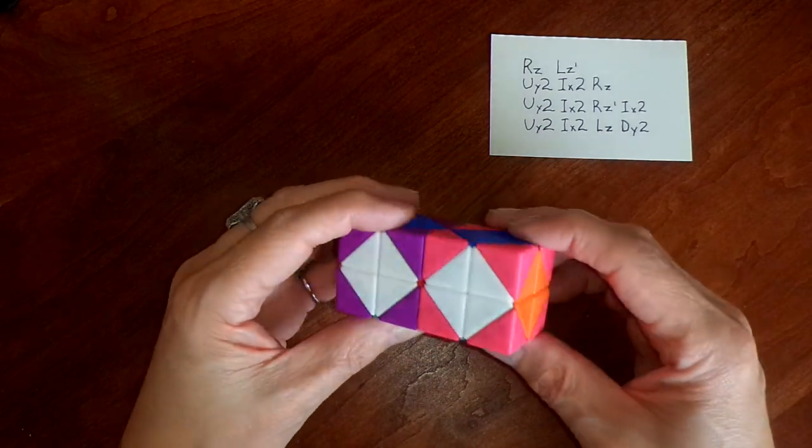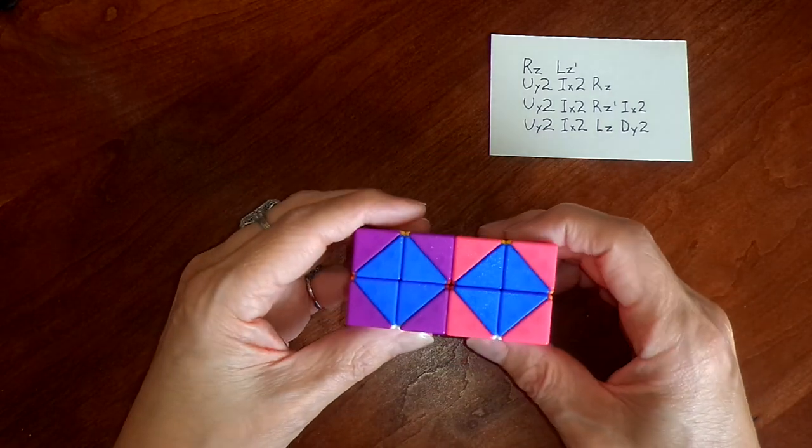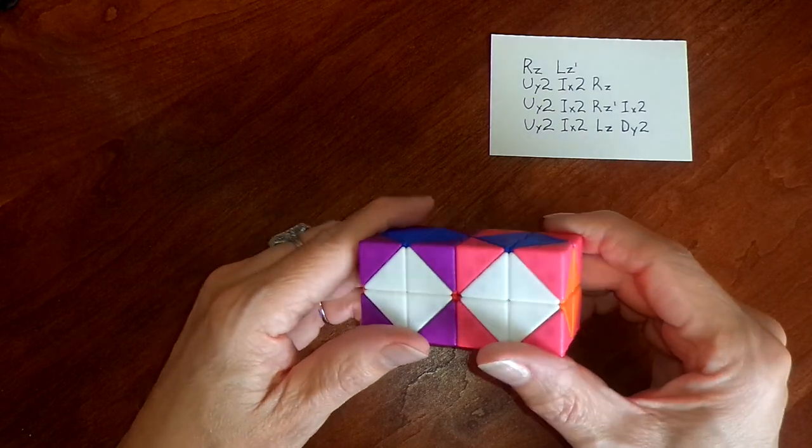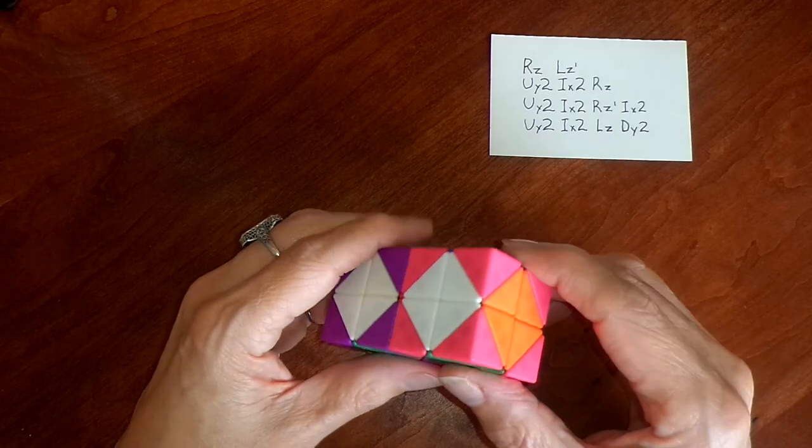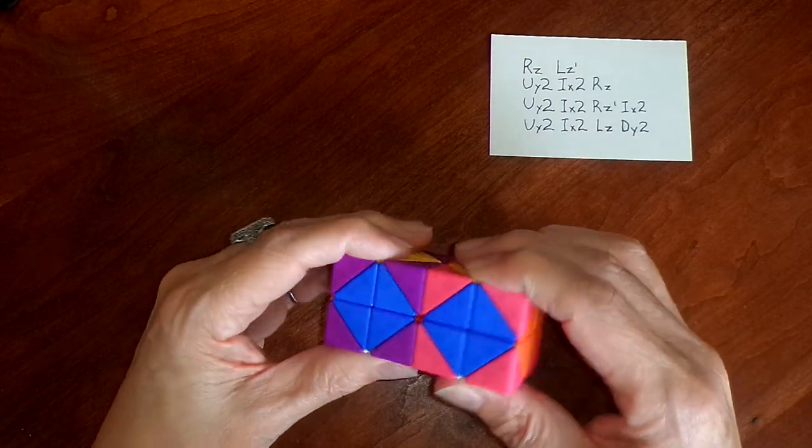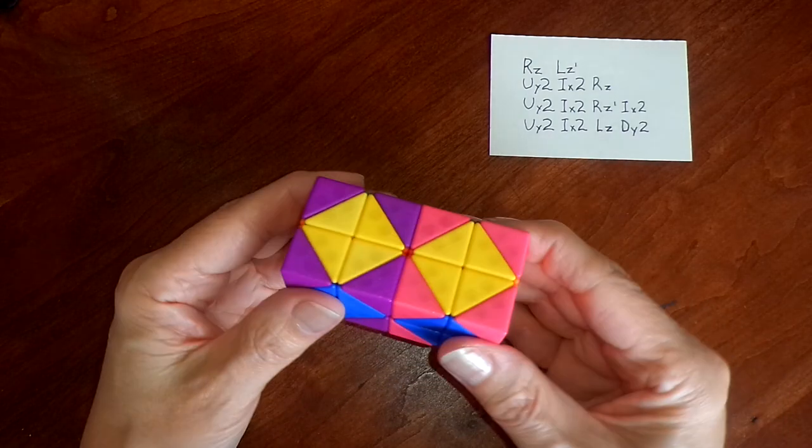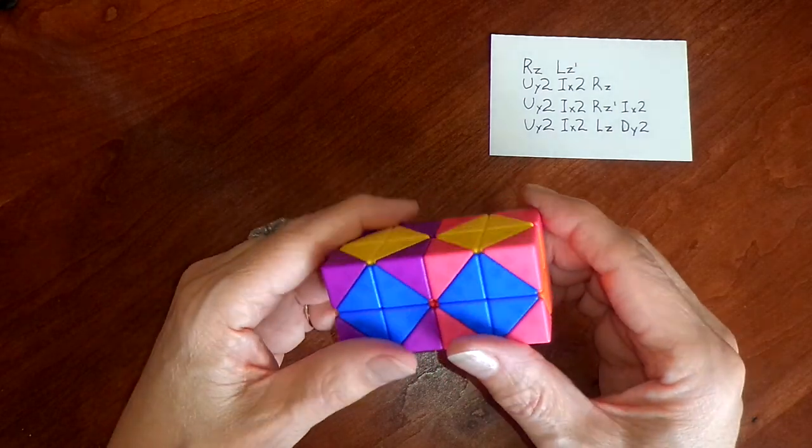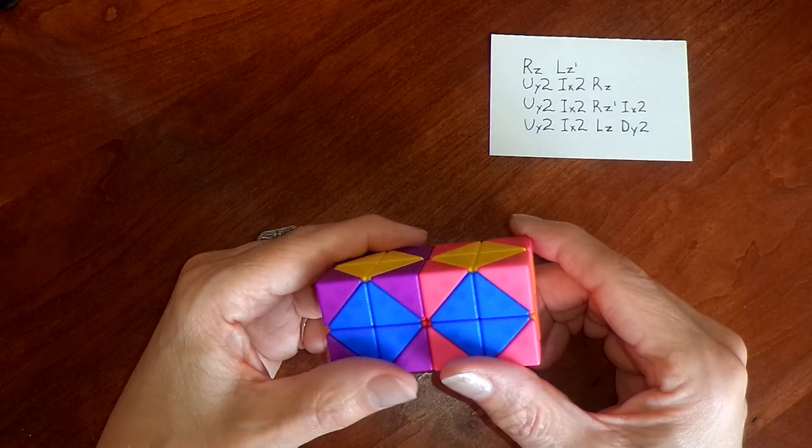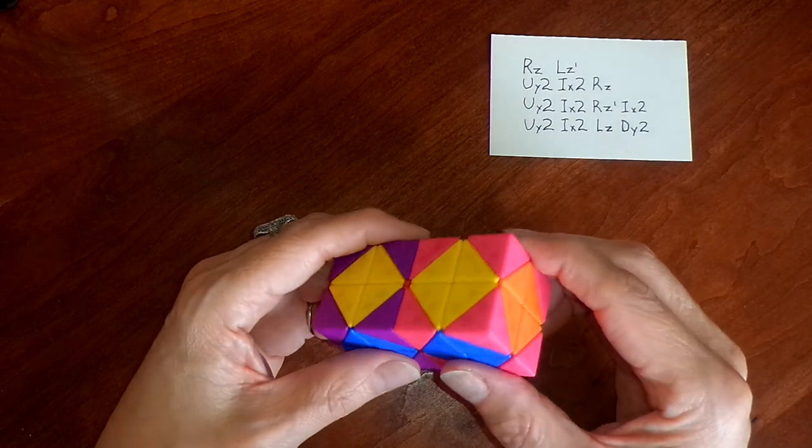Neat, huh? This was discovered by Tom Rokiki, the same fellow who proved God's algorithm for the original Rubik's Cube. He used his software to work on this problem to find the shortest possible solutions to this parity issue. And he came up with a number of them, and I'm going to put them all in the description section of the video.